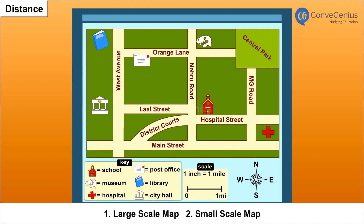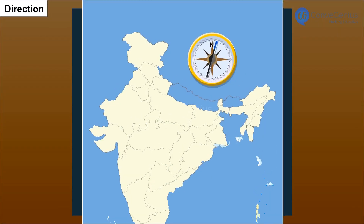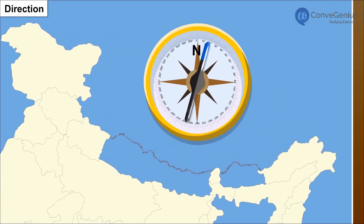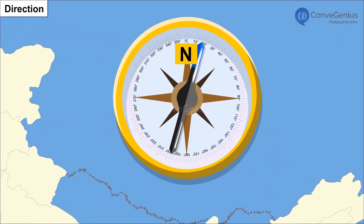1. Large scale map, 2. Small scale map. Direction: You can find an arrow marked sign with the letter N at the upper right hand corner in the map. It shows the north direction and is known as north line. Using the direction of the north line, people can easily find out other directions like east,